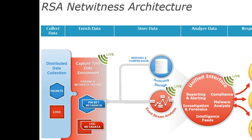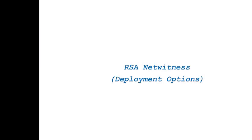The fifth layer is 'Incident Response.' RSA NetWitness has a built-in feature where you can configure an incident for any alert, assign it, and the owner of that incident can take action accordingly. This tool is also capable of integrating with ECAT for endpoint device monitoring, and can be integrated with separate ticketing tools such as IT GRC, BMC Remedy, or other tools. That concludes the logical architecture of the RSA NetWitness solution.